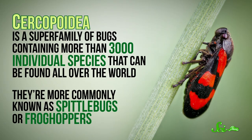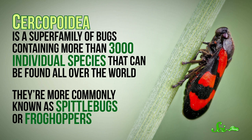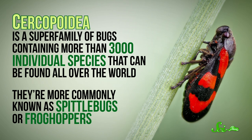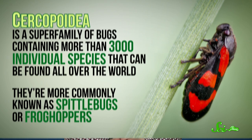Cercopoidea is a superfamily of bugs containing more than 3,000 individual species that can be found all over the world. They're more commonly known as Spittlebugs or Froghoppers. These little guys usually come in somewhere between the size of a short grain of rice and an unshelled peanut. But what makes Spittlebugs unique and deadly is their diet.